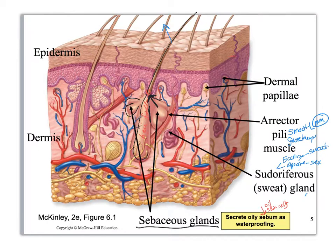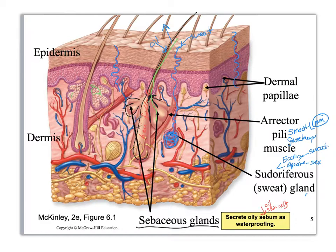The sweat gland is going to start as a coiled tube, then it's going to have a tube that comes up through the epidermis and comes out onto the skin in its own pore. So this is oil from sebum, and this is sweat. The sudoriferous gland gets its own duct, while oil from a sebaceous gland comes out with your hair follicle. They are structurally quite different.